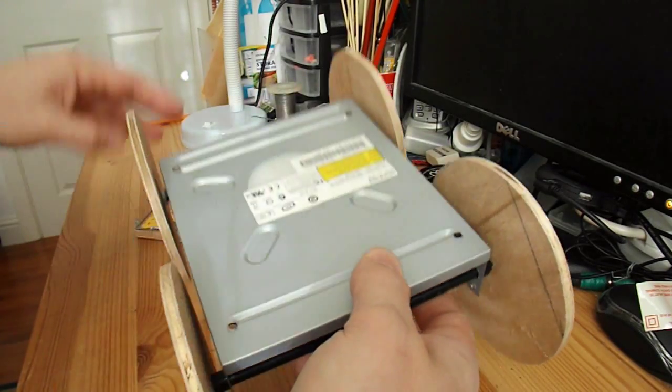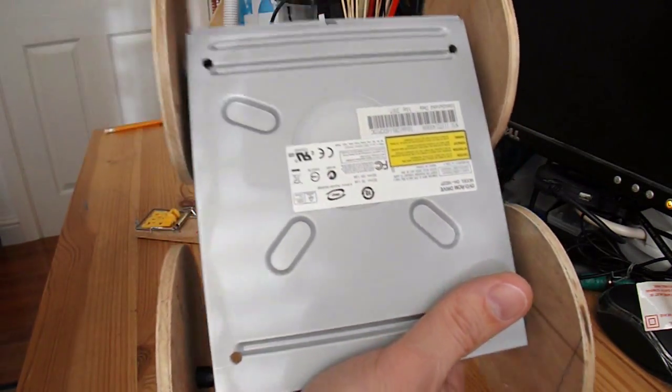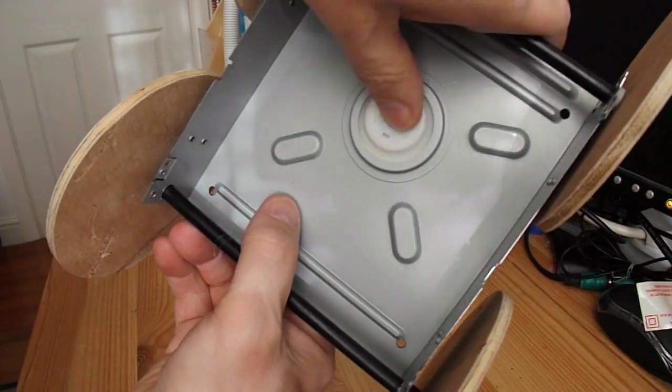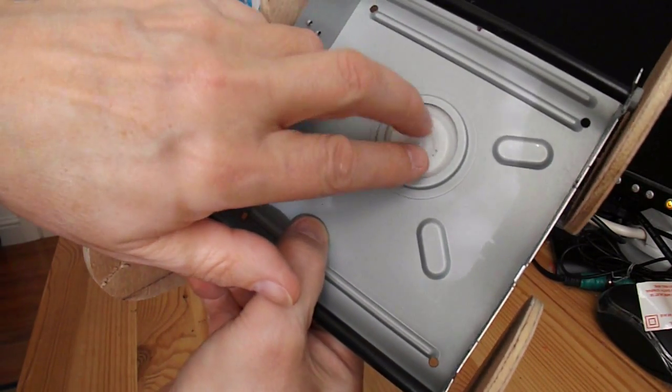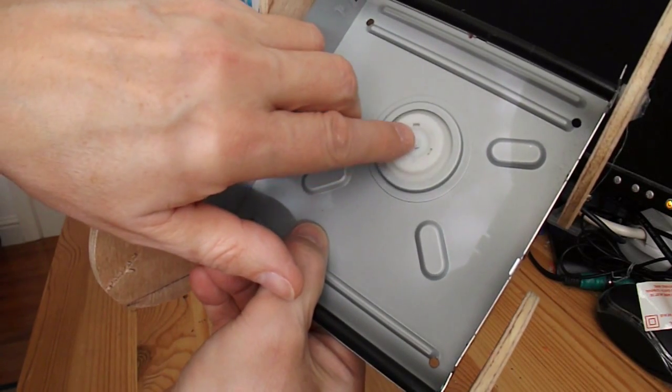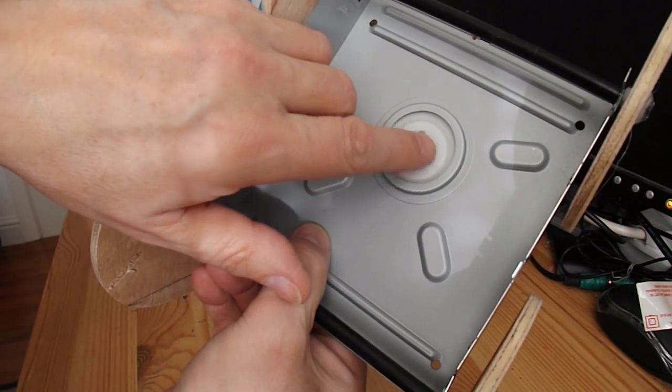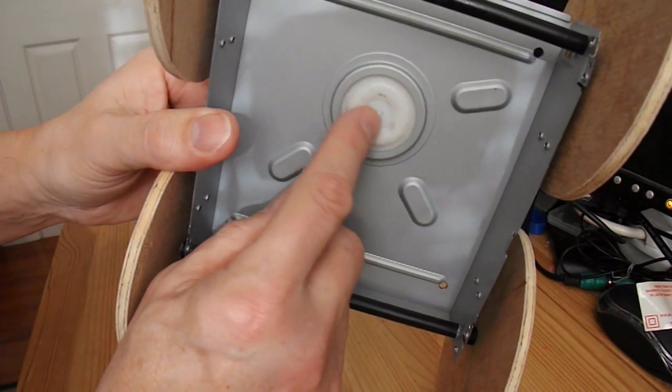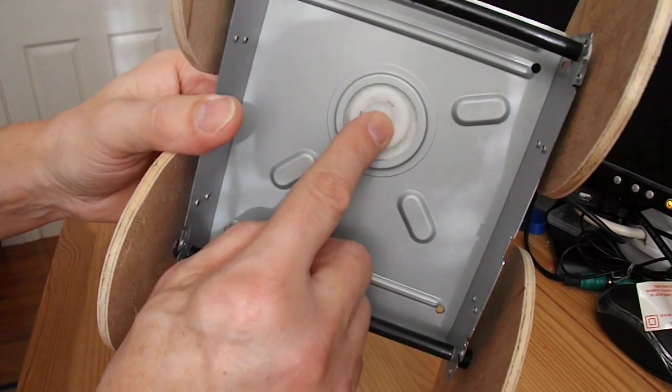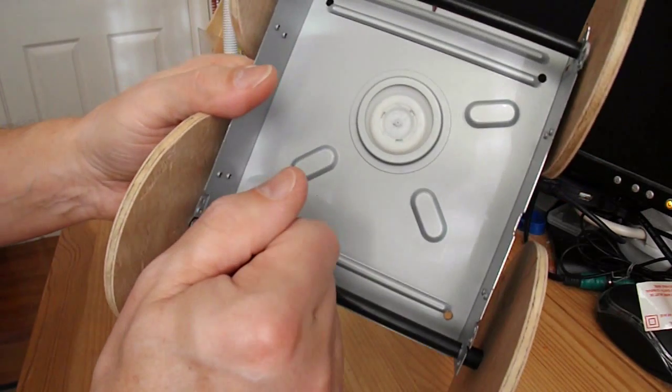And before I do that, I think I might just take this bit out of the center here. That's got a magnet in it, and that helps the drive locate the DVD or CD when it's in place. But I don't need it there, and I'll take it out, because I might use that for something else later.